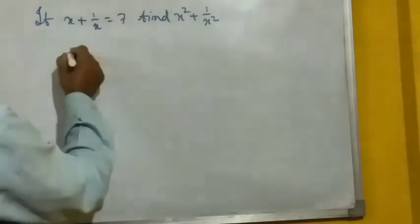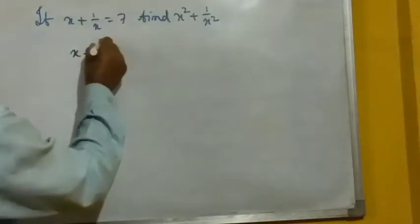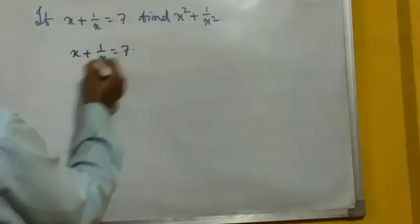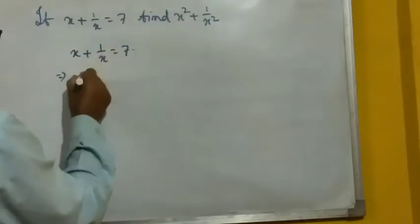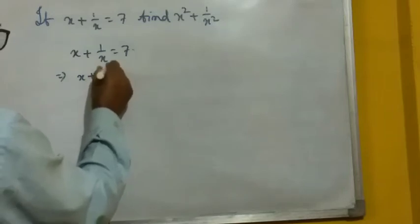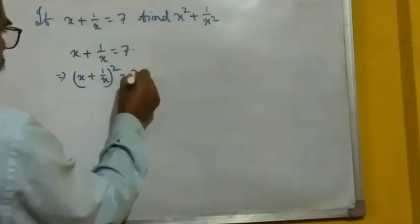So in that sum, first we will write the given part x plus 1 by x equal to 7. Now square is there, so to get the square, we have to square both sides. So x plus 1 by x whole square equal to 7 square.